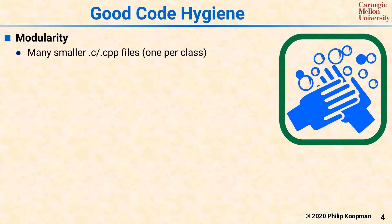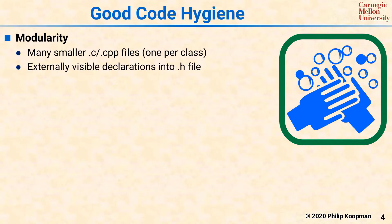For example, put a struct or typedef data definition, along with its initializers and access methods, into a single .c file and nothing else. Only externally visible declarations should be stored in a separate .h file paired with each .c file.